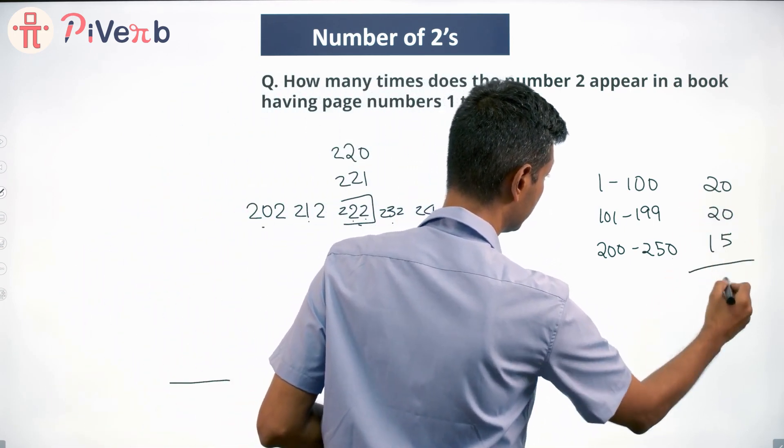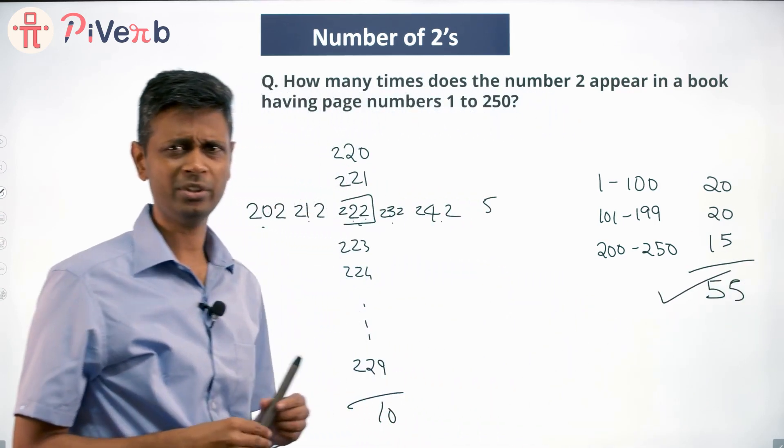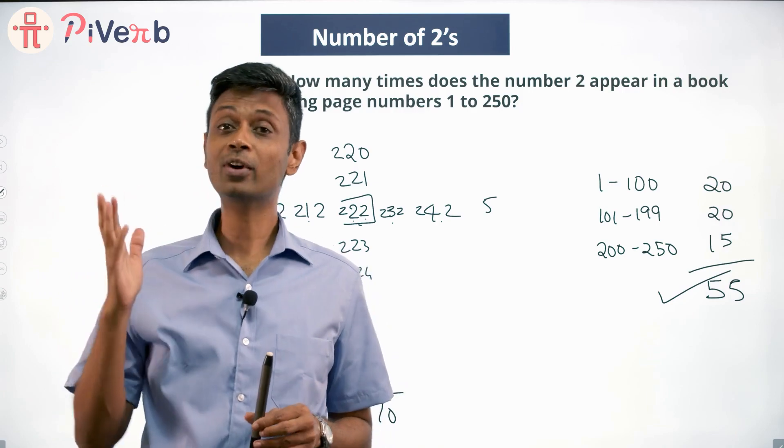20 plus 20 plus 15, 55 done and dusted. Are we missing something? Have I completely forgotten something?